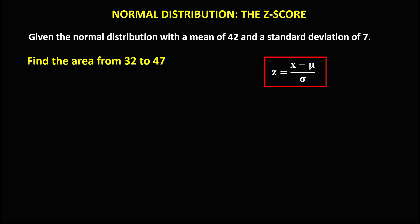Let's solve this topic. For this normal distribution, we use the Z-score. Given the normal distribution with a mean of 42 and a standard deviation of 7, we need to find the area from 32 to 47. First, we need to convert these numbers to Z-scores using this formula.